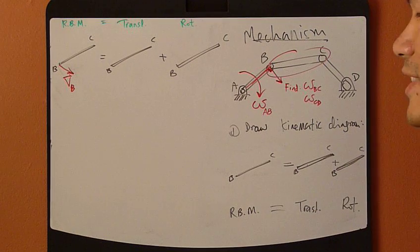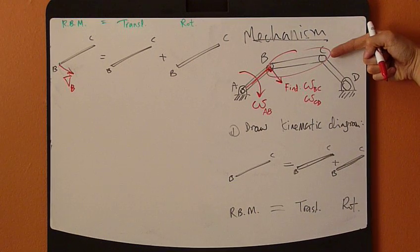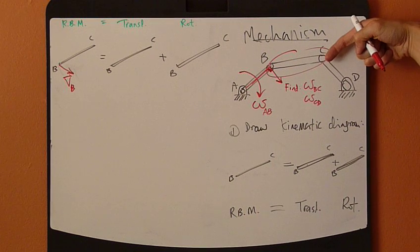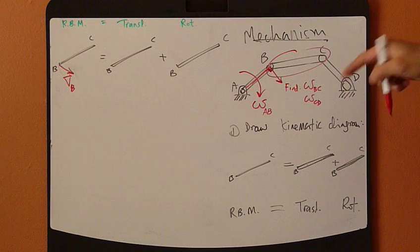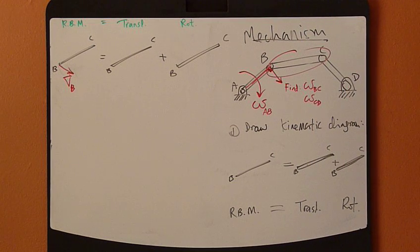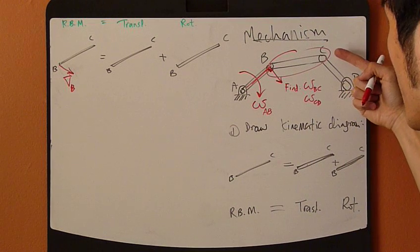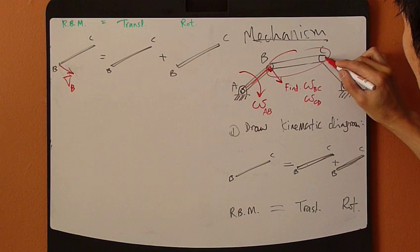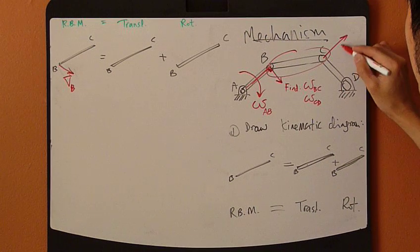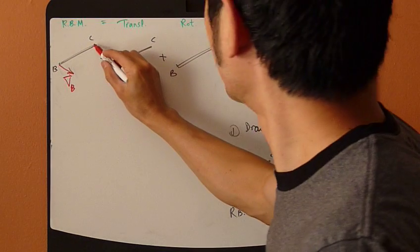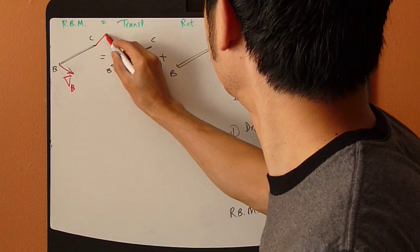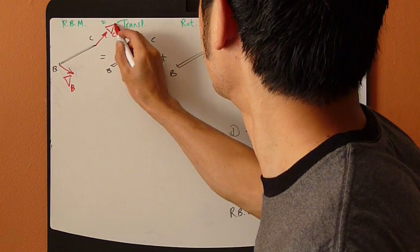For velocity of C, again this point C is also attached to CD and CD is also spinning, so C will follow this direction going kind of that way. This might be C.